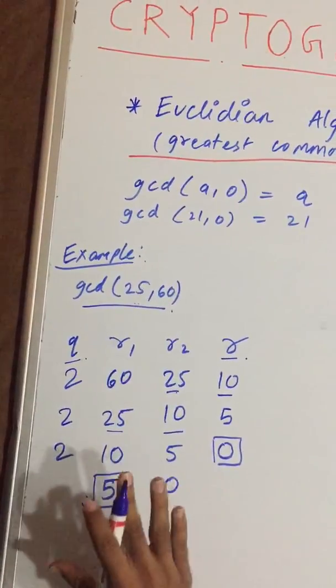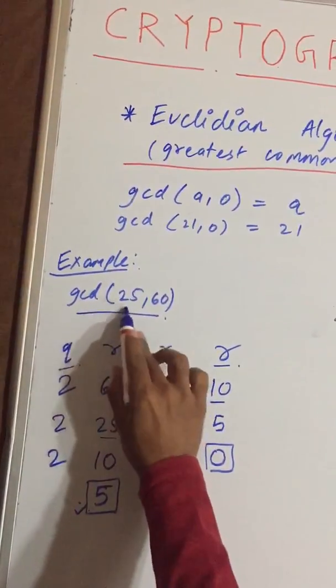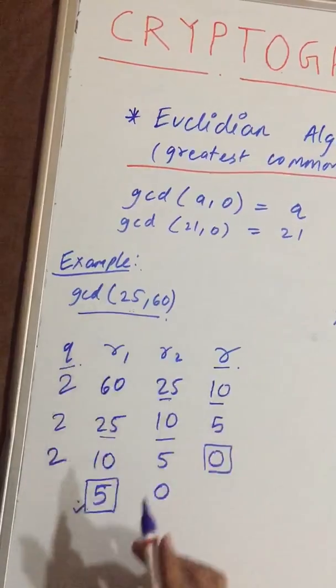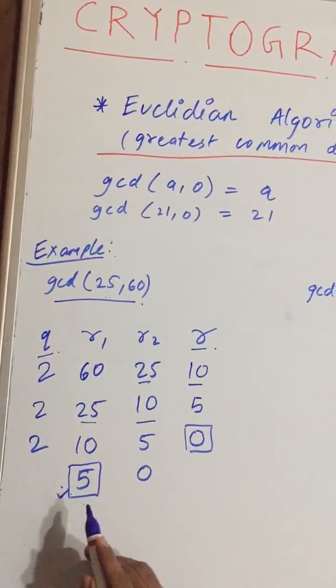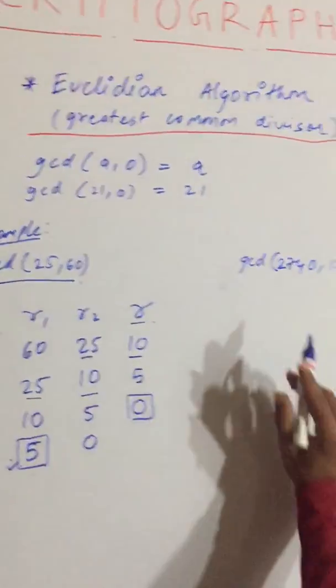This is a simple example. As you can see, these are both small numbers, so it is small and easily findable.